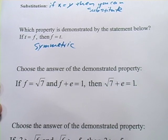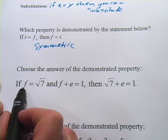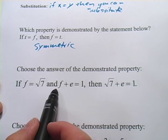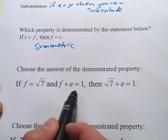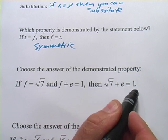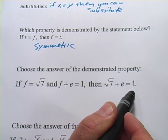Let's look at another one. This one says choose the answer of the demonstrated property. If f equals the square root of 7, and f plus e equals 1, then square root of 7 plus e equals 1. This might be a little harder to see.